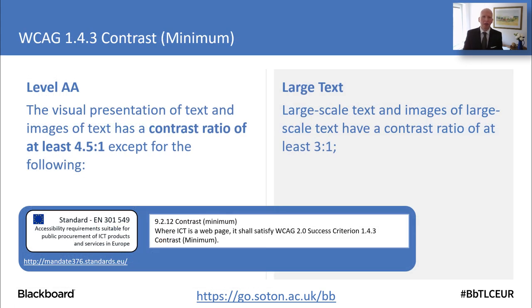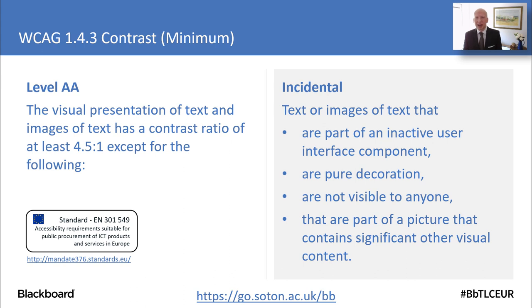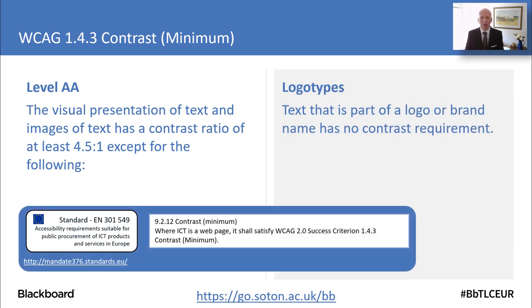Earlier we were looking at graphics and icons, but what about text? The AA standard, which is our minimum standard in the regulations, is that text should have a contrast ratio of at least 4.5 to 1. There are some exceptions: large text — if it's 18 points or higher, or 14 points in bold — could have a slightly lower contrast ratio. Also incidental text that is inactive or just decoration, and logos or brand names, do not need by these regulations to have sufficient contrast.